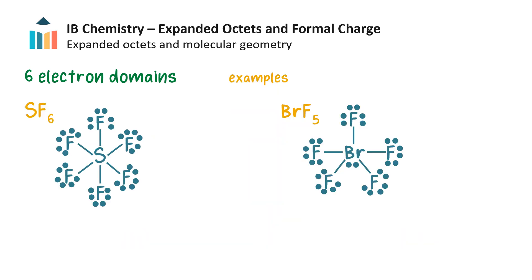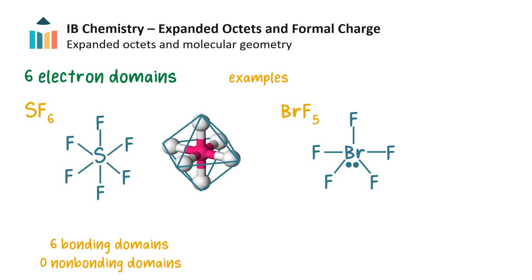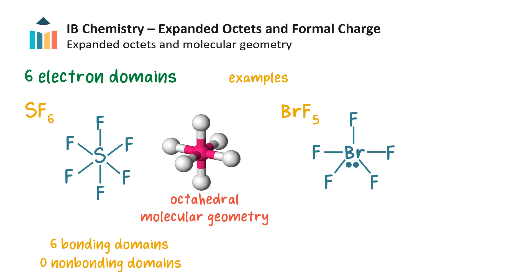These two compounds both have expanded octets on the central atom, with 12 valence electrons and 6 electron domains. Removing the lone pairs on the outer atoms for clarity: sulfur hexafluoride has no lone pair but 6 equivalent bonding electron domains. They repel each other equally, forming an octahedral electron domain geometry and an octahedral molecular geometry.